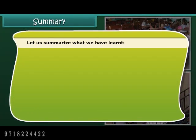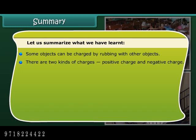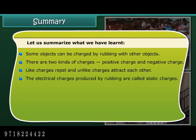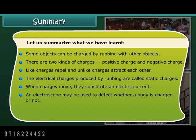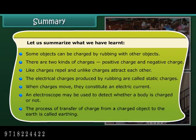Some objects can be charged by rubbing with other objects. There are two kinds of charges: positive charge and negative charge. Like charges repel and unlike charges attract each other. The electric charges produced by rubbing are called static charges. When charges move, they constitute an electric current. An electroscope may be used to detect whether a body is charged or not. The process of transfer of charge from a charged object to the earth is called earthing.